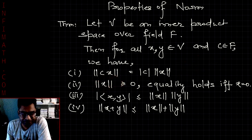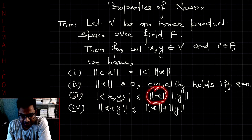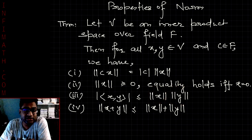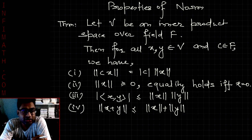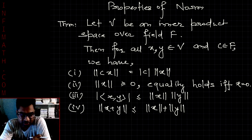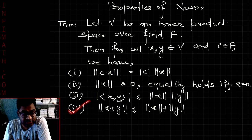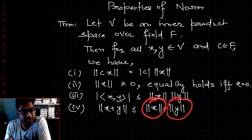The third property is that the modulus of the inner product ⟨x, y⟩ will be less than or equal to the norm of x multiplied with the norm of y. This is a particular case of the general inequality called the Cauchy-Schwarz inequality, and it is a very important property of norm. The last property is the famous triangle inequality: the norm of x plus y is less than or equal to the norm of x plus the norm of y.